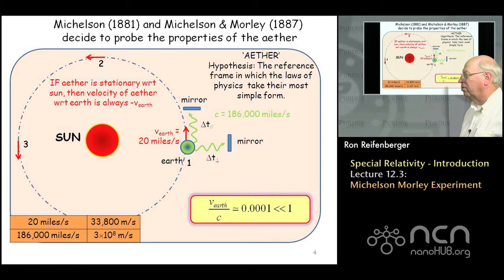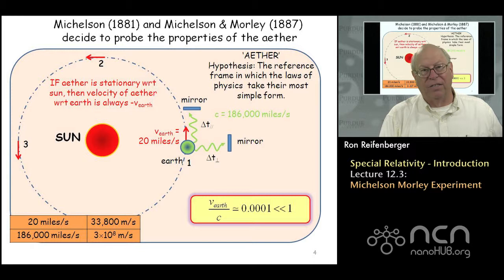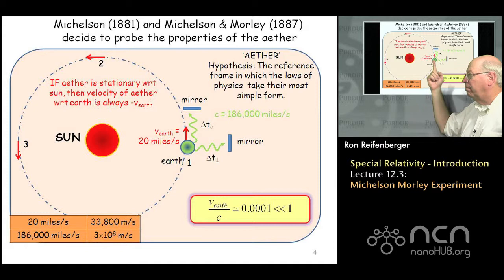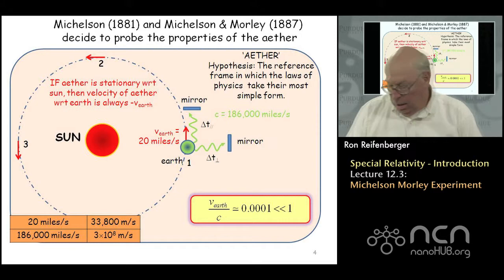The velocity of the earth with respect to the speed of light is really small — much, much less than 1. The ratio of the velocity of the earth to the speed of light is about 10 to the minus 4. That means you're going to need a very precise measurement of time intervals if you're going to pull this experiment off.